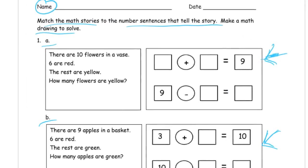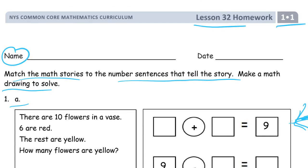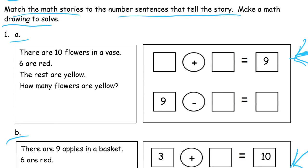Let me zoom back in for A. There are ten flowers in a vase. Six are red, and the rest are yellow. How many flowers are yellow? We count out ten total, and six are red.